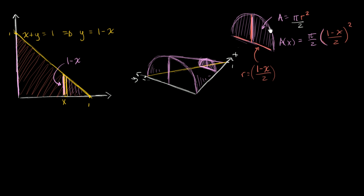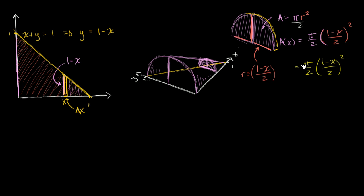To get the volume of one of these half-disks, we multiply that area by the depth, which we call delta x. So the volume of one of these half-disks is pi over two times (one minus x over two) squared times delta x.